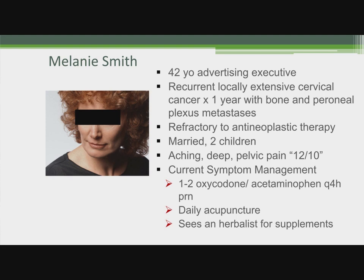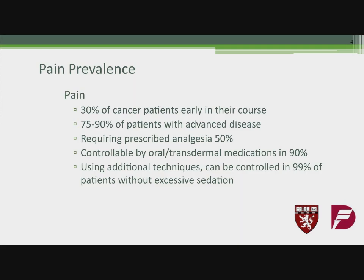She reports her pain as aching, deep pelvic pain, 12 out of 10. Her current symptom management includes one to two oxycodone-acetaminophen combination tablets every four hours as needed, daily acupuncture, and she sees an herbalist for supplements. Thirty percent of cancer patients have pain early in their course, but patients like her — 75% to 90% of those with advanced disease — will have pain. Most require prescribed analgesics, but the good news is it's controllable by oral or transdermal medications in 90%, and with additional techniques, in 99% without excessive sedation.